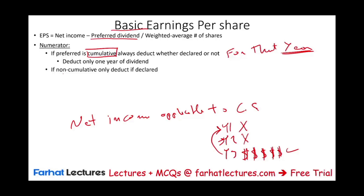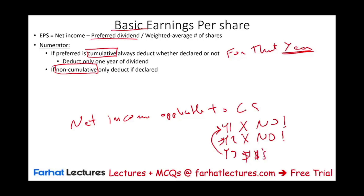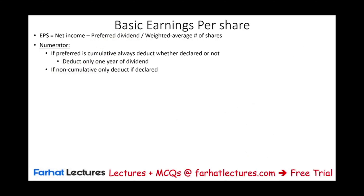If the preferred is non-cumulative, you only deduct if declared. So if in year one you did not make any profit — no dividend. In year two, you did not make any profit or did not declare it — no dividend. In year three, you made a lot of money — you only pay year three. You don't have to go back and pay year two and year one because the preferred is non-cumulative. Preferred dividends come in different flavors — some are cumulative, some are not — so be careful when you are looking at an exercise, whether it's cumulative or not.